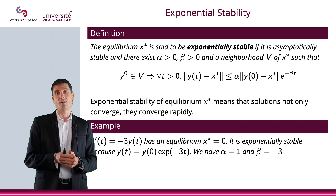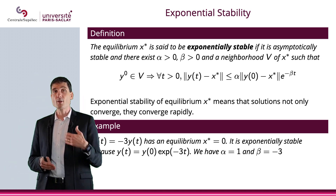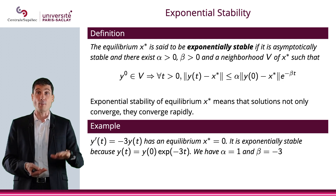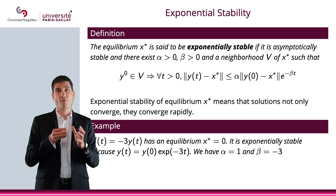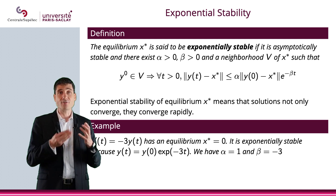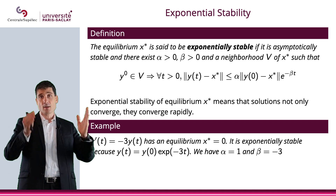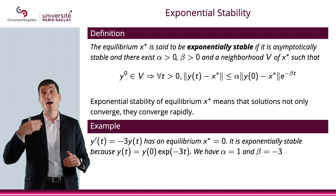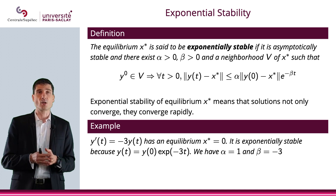It can be even better than asymptotically stable: you can be exponentially stable. Not only do you converge to the equilibrium, you do so exponentially, with an exponential minus beta t — very fast convergence. Formally, there will be a neighborhood of x star such that when you start in that neighborhood, for all positive t, |y(t) minus x star| will be bounded above by a constant alpha times |y0 minus x star| times exponential minus beta t.